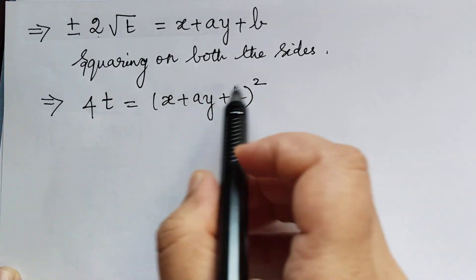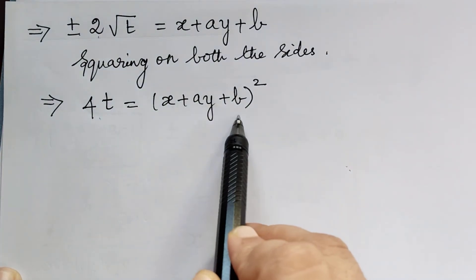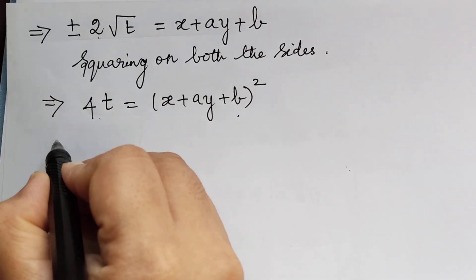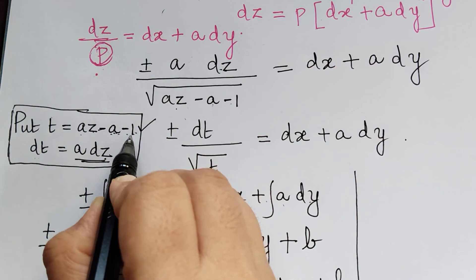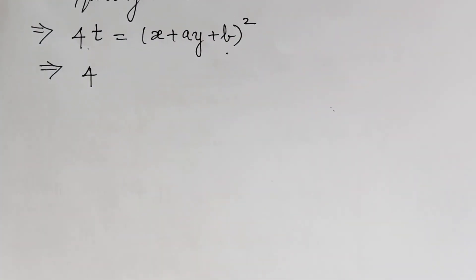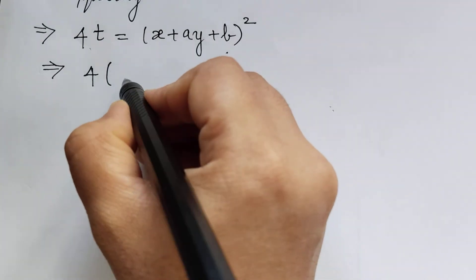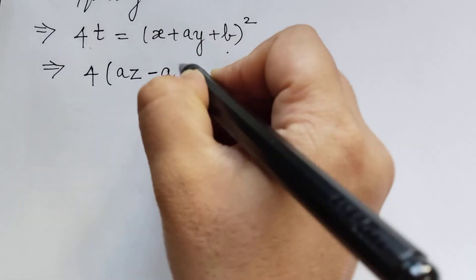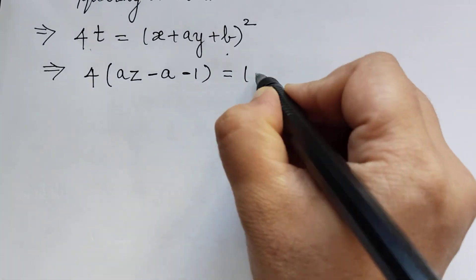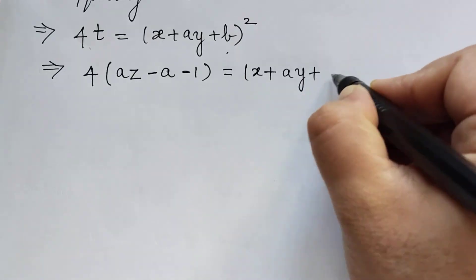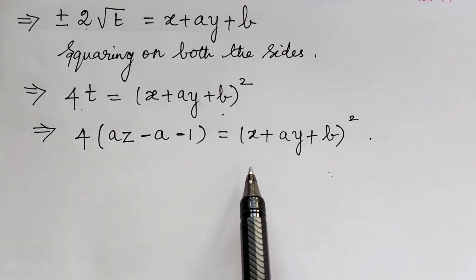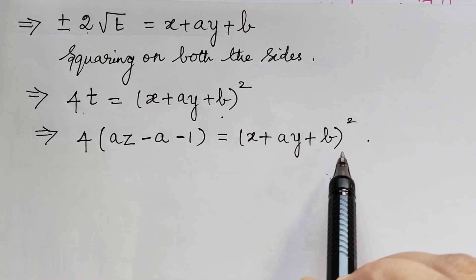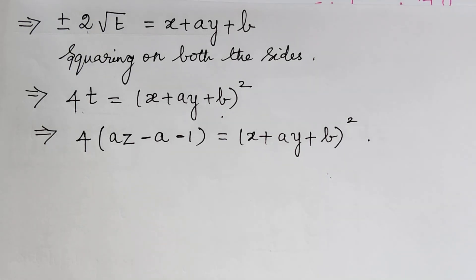Now back-substituting t equals az minus a minus 1, we obtain 4 times az minus a minus 1 equals x plus ay plus b, the whole squared. This is the complete integral for the given problem. Hope you have understood this. In our next video we will solve problem 2, so kindly follow the next lecture. Thank you.